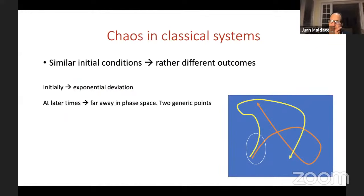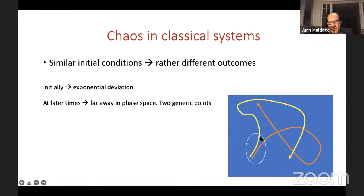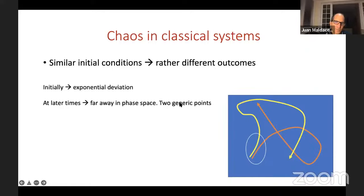We need to say a few words about chaos in classical systems first. Chaos is related to the fact that similar initial conditions can lead to rather different outcomes. You start with two nearby trajectories in phase space and they exponentially diverge from each other, eventually reaching generic points in the phase space. There are two dynamical regimes: an initial exponential deviation, and then at late times the trajectories are just two generic points in phase space separated by the typical phase-space distance.